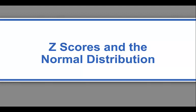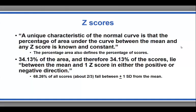In this module, we will discuss the relationship between z-scores and the normal distribution. A unique characteristic of the normal distribution is that the percentage area under the curve between the mean and any z-score is known and constant.